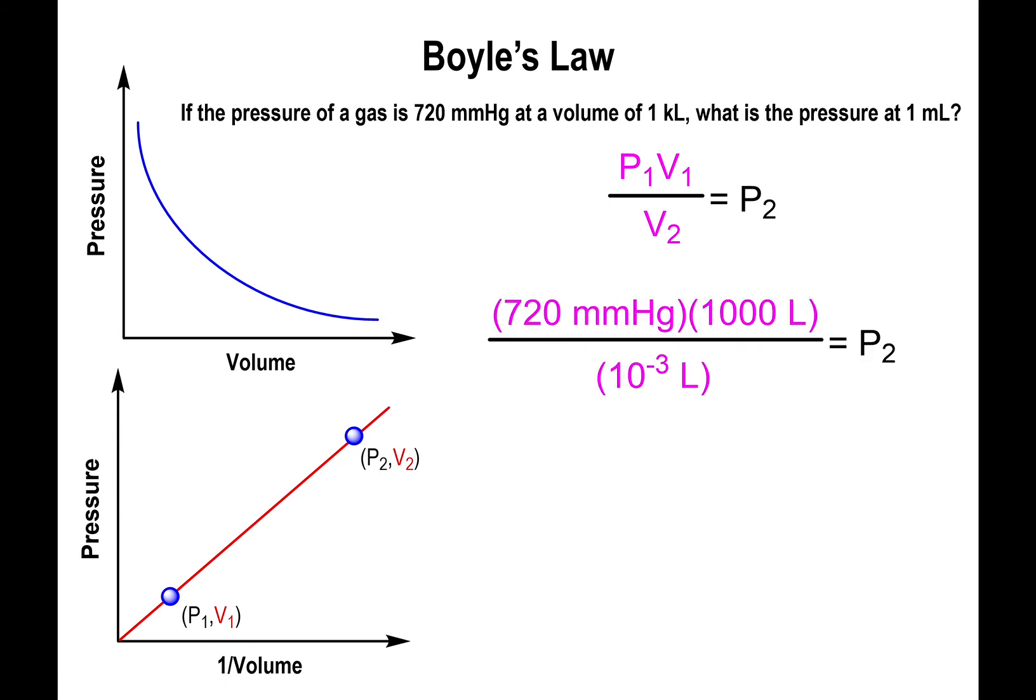You need to change either kiloliters to milliliters or vice versa, or you could change both to liters. The idea is that the volumes have to have the same units, otherwise they will not cancel out. One kiloliter equals 1000 liters, and one milliliter equals 10 to the negative 3 liters. In this format, the units cancel out. It's not sufficient to just write the numbers; you need to write the units to ensure they can be cancelled.